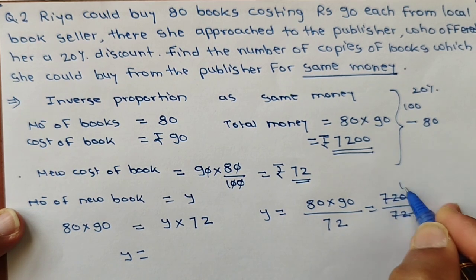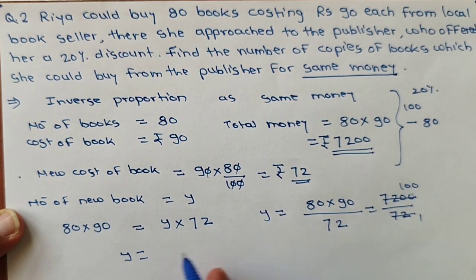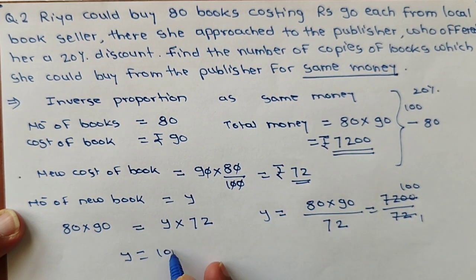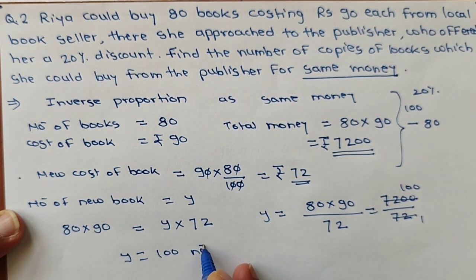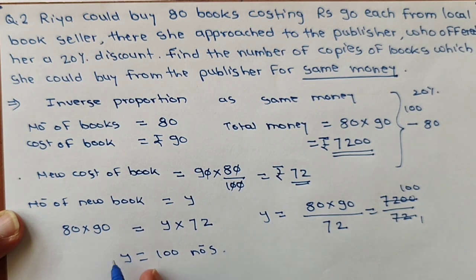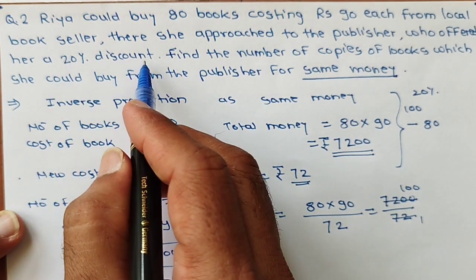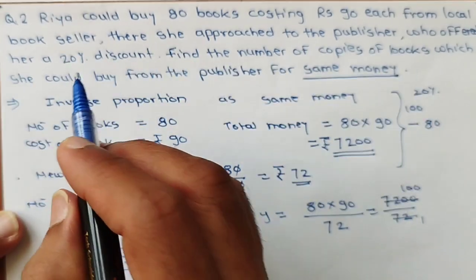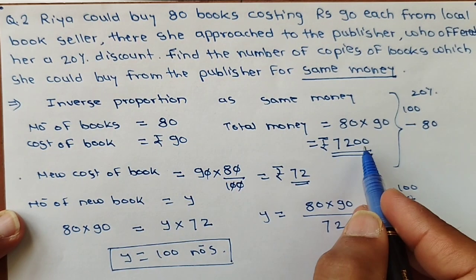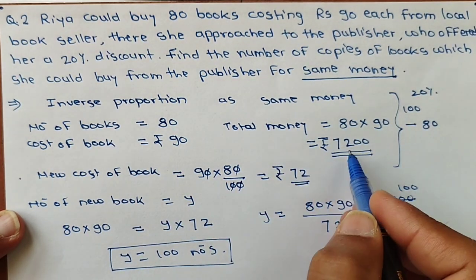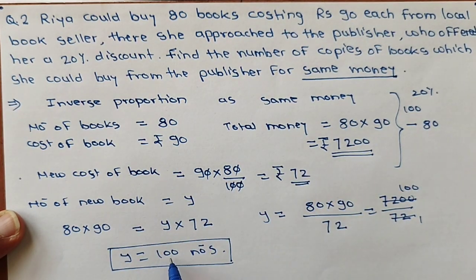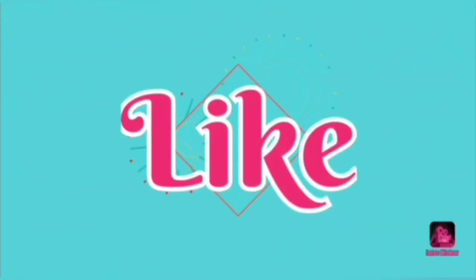So our answer is: when the publisher offered a 20% discount, she could buy 100 copies of the book with the same money. That is our final answer. This is all for this video. Thank you.